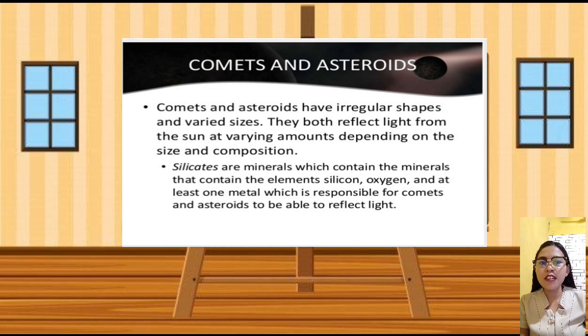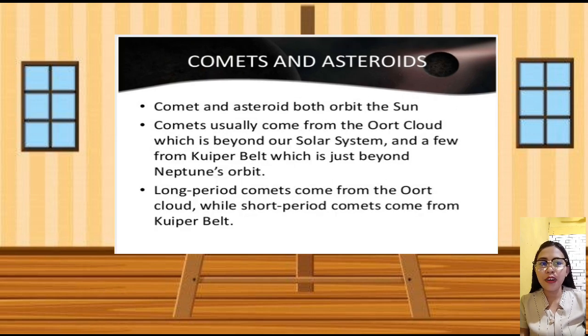They both reflect light from the sun at varying amounts depending on the size and composition. Silicates are minerals which contain the elements silicon, oxygen, and at least one metal, which is responsible for comets and asteroids to be able to reflect light. Comets and asteroids both orbit the sun.